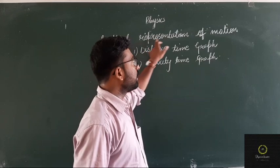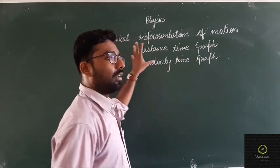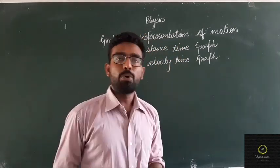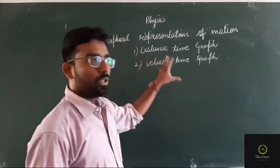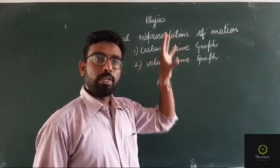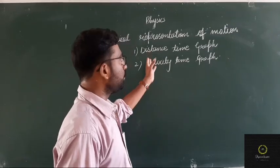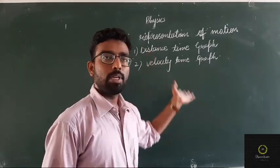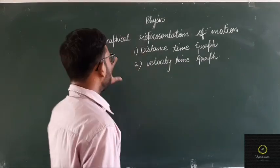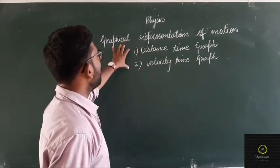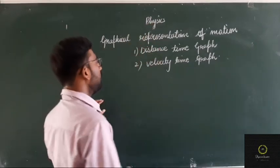A graph is a type of tool which is used to define the motion of an object. In motion, distance can be defined, time can be defined, or velocity. So if we have to study the relations of a distance-time graph or velocity-time graph, first of all we need to understand what a graph is.